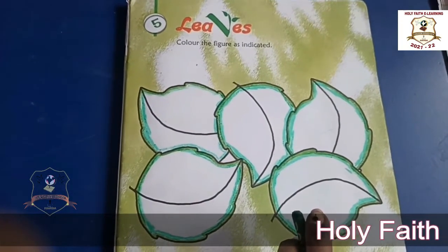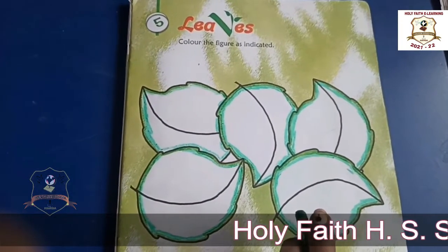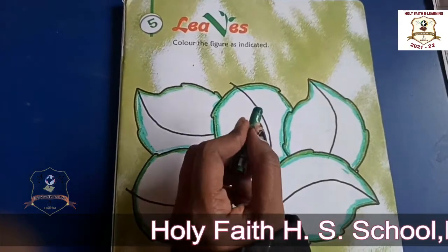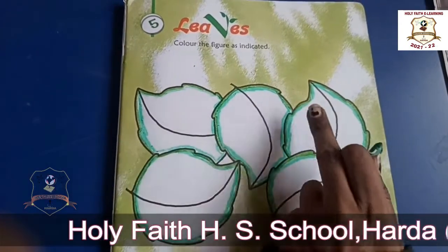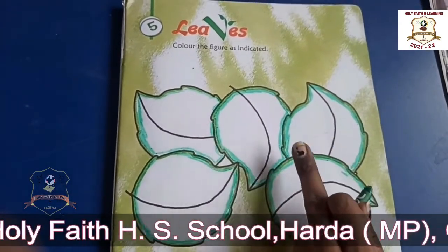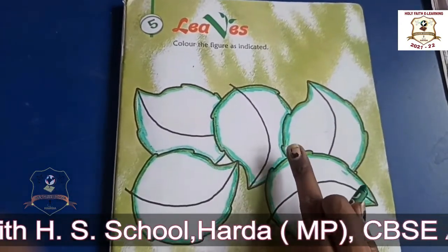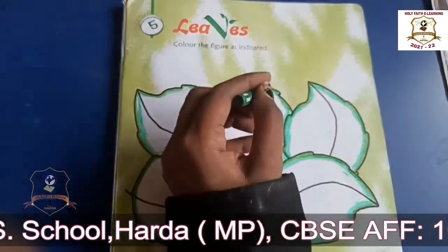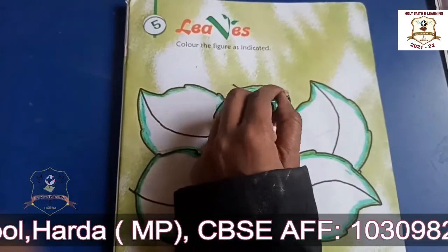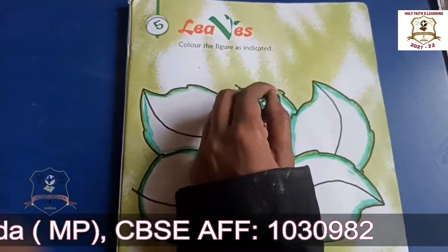Now fill the color in the center. We will rotate the crayon and fill the color in center. Do not press too hard. Look at here.